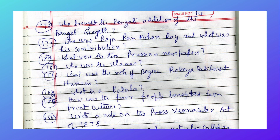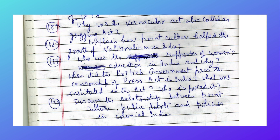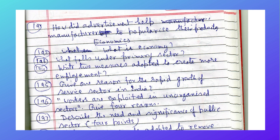Write a note on the Vernacular Press Act of 1878. Why was the Vernacular Press Act also called the Gagging Act? Explain how print culture helped the growth of nationalism in India. Who was a supporter of women's education in India? When did the British government pass the Censorship of the Press Act in India? Discuss the relationship between print culture, public debate, and politics in colonial India. How did advertisements help manufacturers popularize their products?